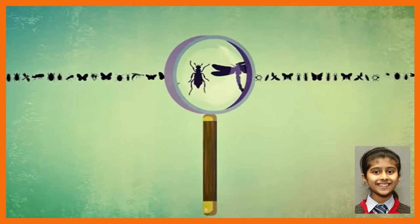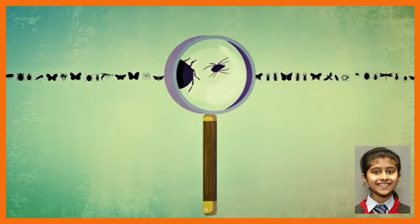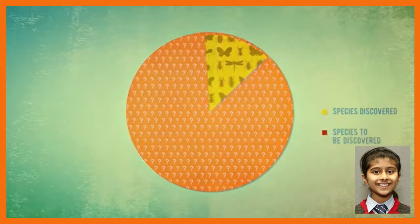So far, about 1.75 million species have been identified, but scientists believe there could be 13 million species living on our planet.